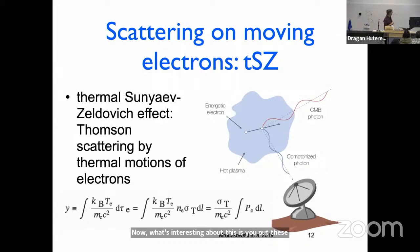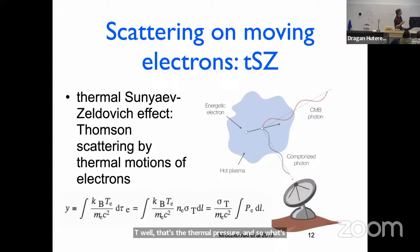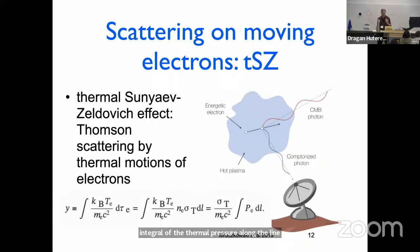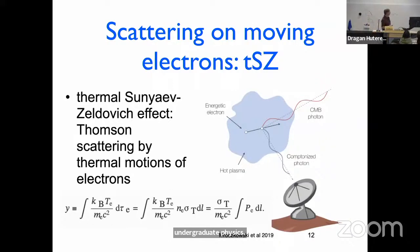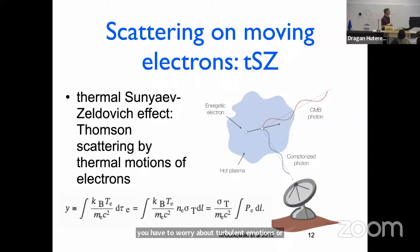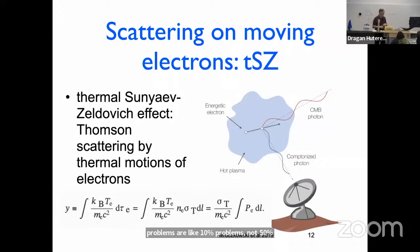Put these together — n, k, T — and that's the thermal pressure. What's interesting is that you have something you can measure: how much Thomson scattering happened and what distortion you got — and it's telling you something about the integral of the thermal pressure along the line of sight through your cluster. Pressure is something we might have a much better chance of extracting from simulations. The only issue is it's only the thermal pressure, so you have to worry about turbulent motions, cosmic ray support, things like that. But those problems are like 10% problems, not 50% problems. So this should be a reasonably reliable estimate of the energy content of galaxy clusters.